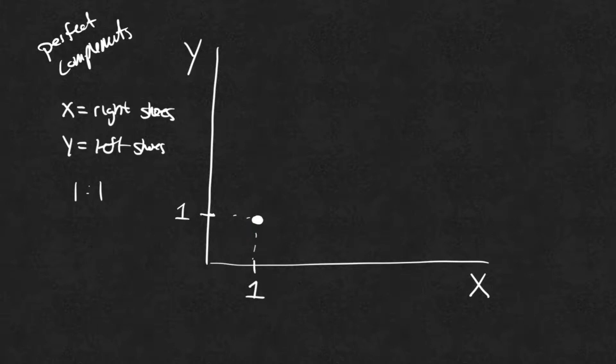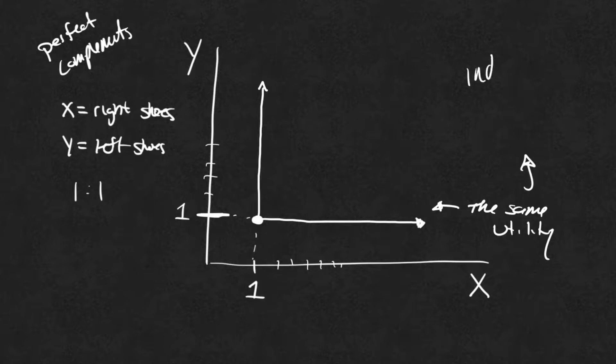Now, if I gain more and more right shoes, I don't get any more utility because I'm dependent on the one left shoe. So that's why we see a straight line going out like this. And of course, if I have one right shoe and I just get more and more left shoes, I am going to stay that same level of utility. So this right here gives me the same utility. Basically, what this is telling me is that I am indifferent.